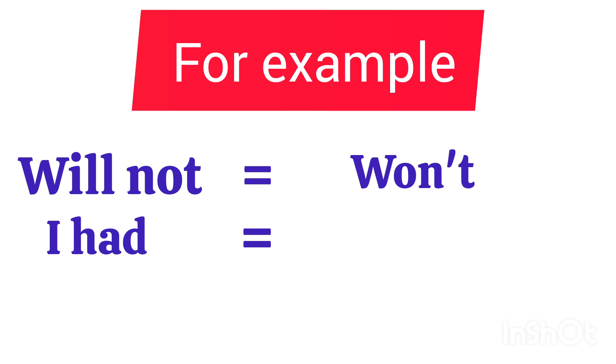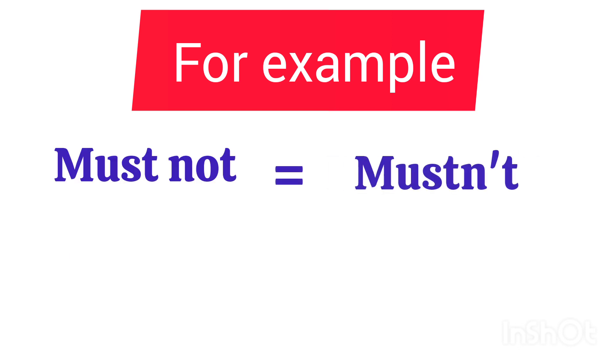Let's look at some more examples. Will not. Won't. I had. I'd. I will. I'll. Must not. Mustn't.